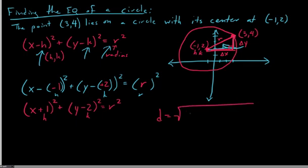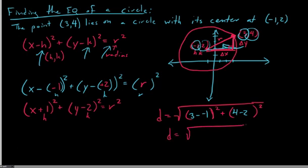The distance between two points is: radical of the difference in y values squared plus the difference in x values squared. The x values: x2 minus x1, that would be 3 minus (-1). The difference between our y values would be 4 minus 2. So we get 3 minus (-1), that's plus 1, which is 4 squared or 16, plus 4 minus 2, which is 2, and 2 squared is 4.